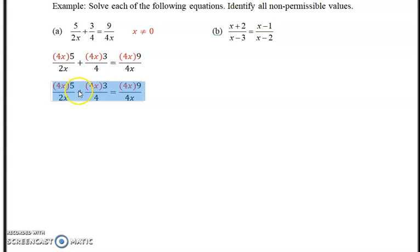So our next line: 5 times 4x is 20x over 2x. 4x times 3 over 4 is 12x over 4. And 4x times 9 over 4x is 36x over 4x. Some people will divide the x first, or identify that the 4x will divide - whatever you're comfortable doing.